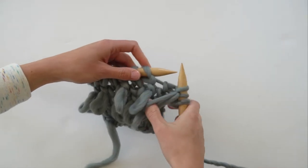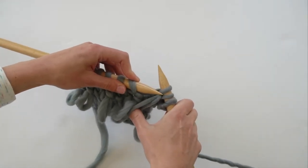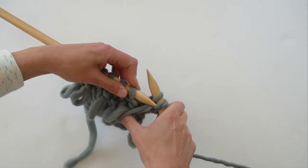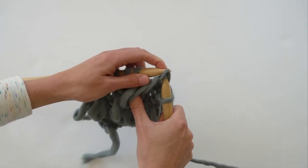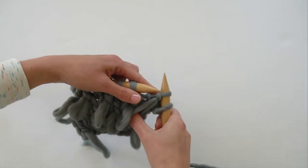And as you see, because you knit into that stitch two times, you end up with two loops on your right needle. So to resolve that, pass the second stitch on the right needle over the first stitch on the right needle, and you're back to just one loop.